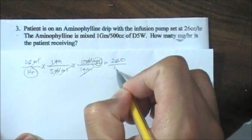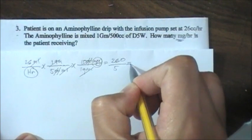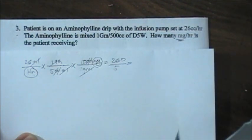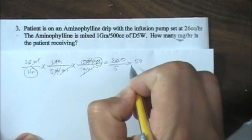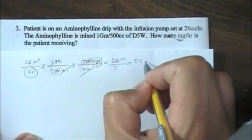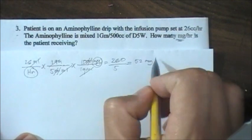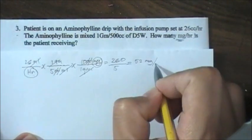So we end up like 26 times 10 is 260, and 5. So this is equivalent to 260 divided by 5 equals 52. And then you just drag your variable here or your unit of measurement which is milligram per hour.